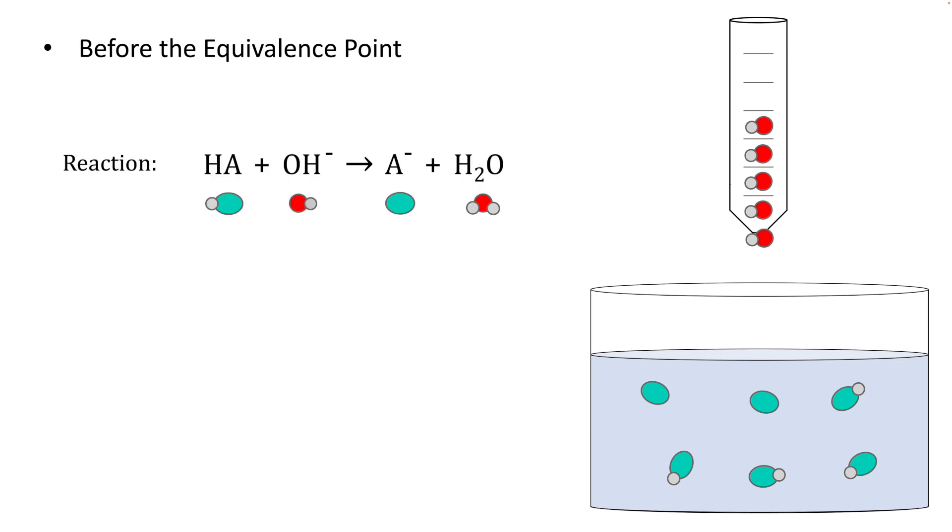We keep titrating, add more hydroxide, reacts with more HA, turns it into or converts it into its conjugate base. Now we have three HA's left, three A minuses formed. We'll do a little bit more. Now we have a fourth HA reacts with OH minus and is converted into A minus. Let's stop again and take a look at what we have.